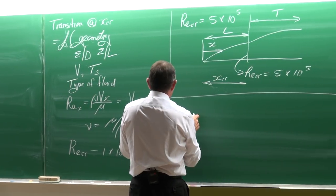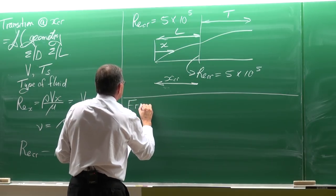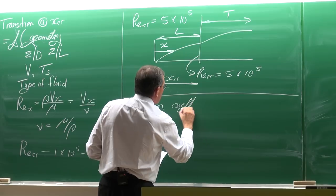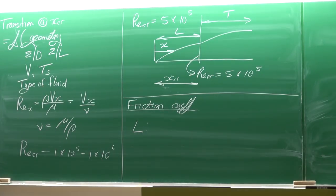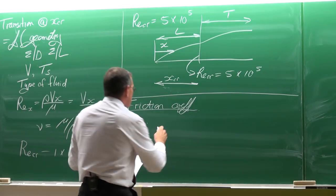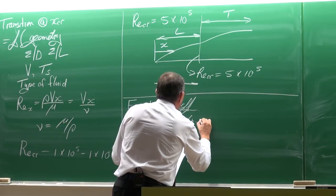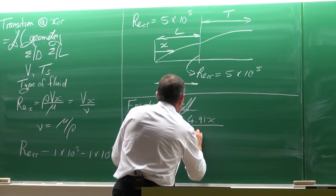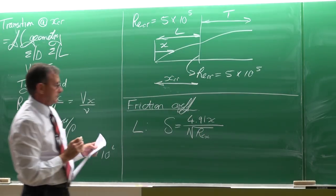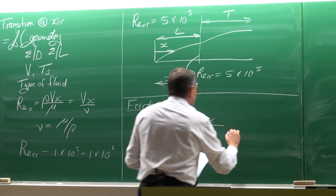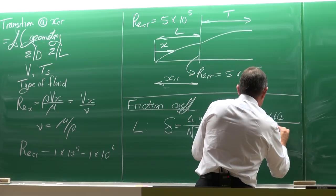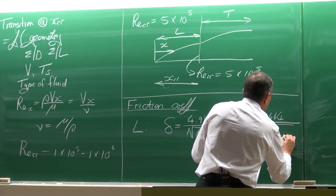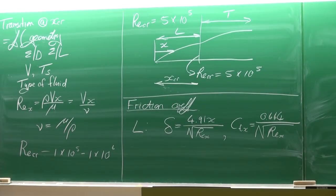From the previous chapter, the friction coefficients for a flat plate are as follows. For laminar flow (Re < 500,000), the boundary layer thickness equals 4.91x divided by the square root of Re_x, and the local friction coefficient C_Fx equals 0.664 divided by the square root of Re_x.